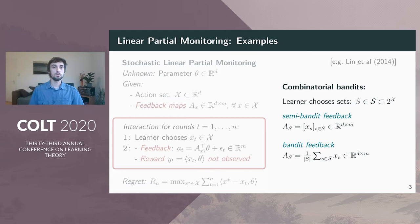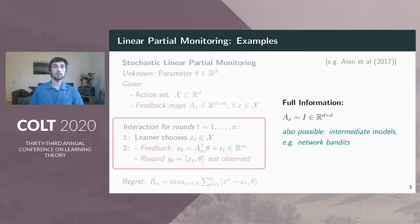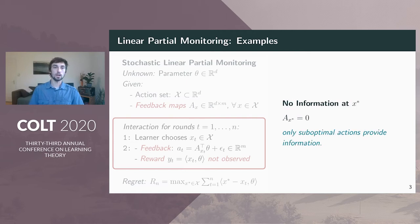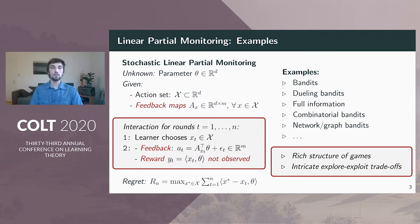Linear partial monitoring also captures the combinatorial bandit setting, both with bandit and semi-bandit feedback. This was the original motivation by Lynn et al., who introduced the linear partial monitoring setting. We can also have semi- and full information feedback, including, for example, network or graph bandits. There can also be tricky cases where the optimal action provides no information and the learner necessarily pays a cost to obtain information about x star.